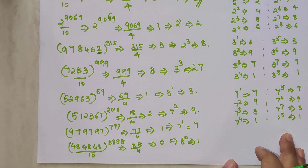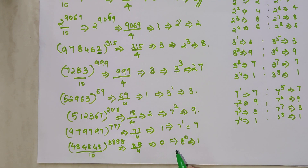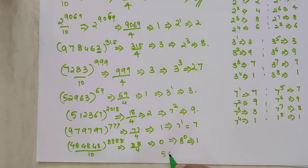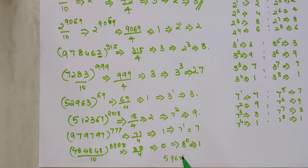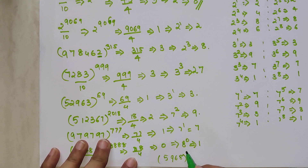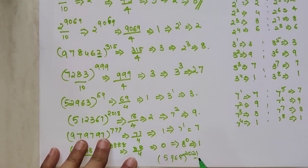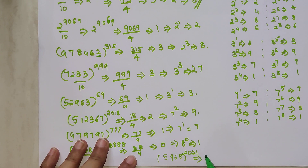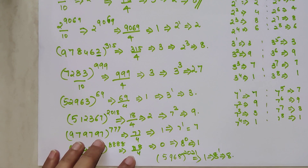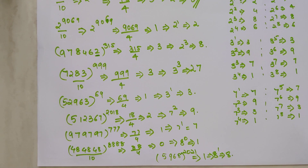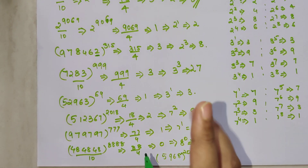Let's do one more sum for 8: 5968 raised to 2021. 21 divided by 4 gives remainder 1. So my final answer is 8 raised to 1, which is 8. It's so easy — you can actually do it in just two seconds.